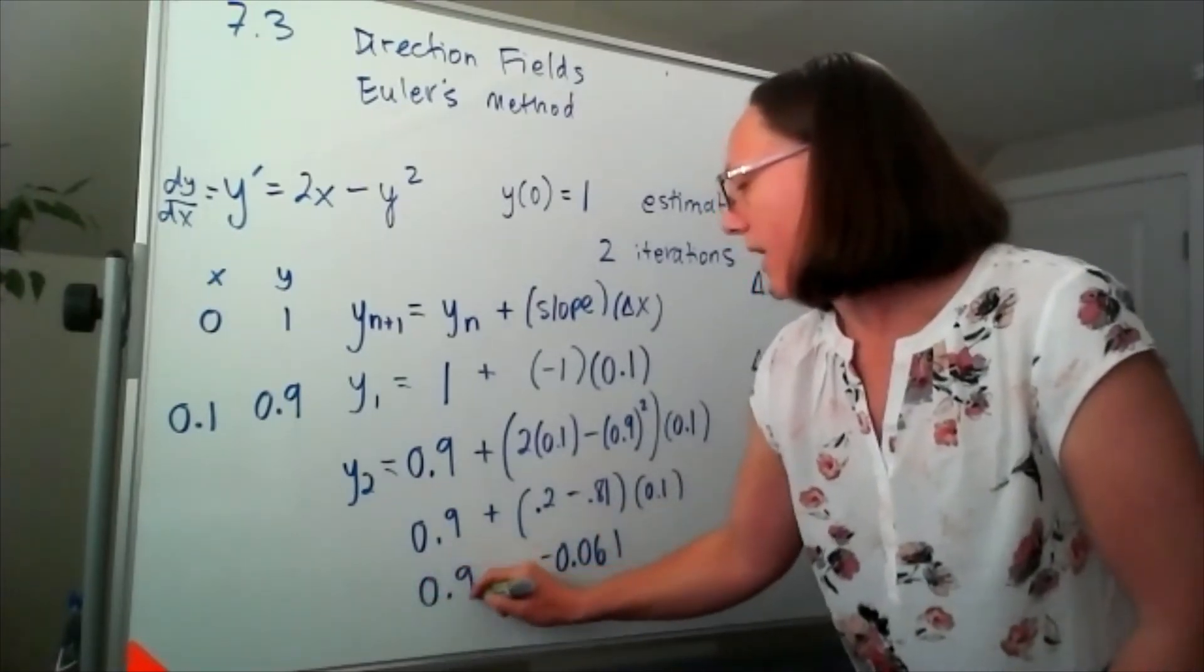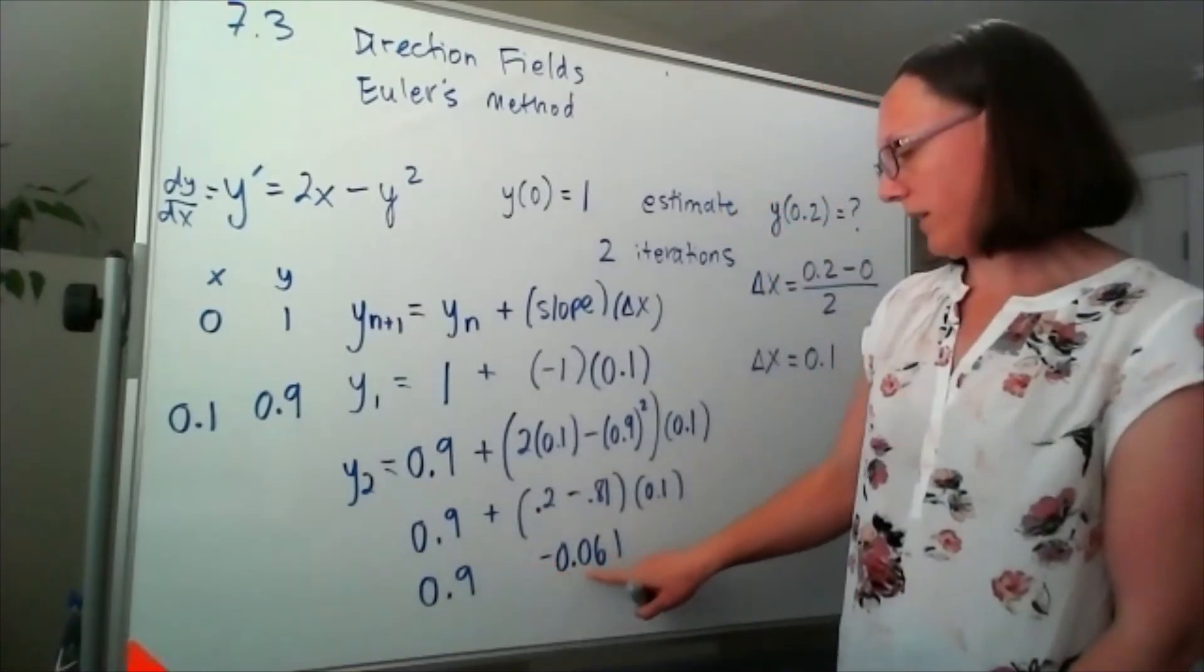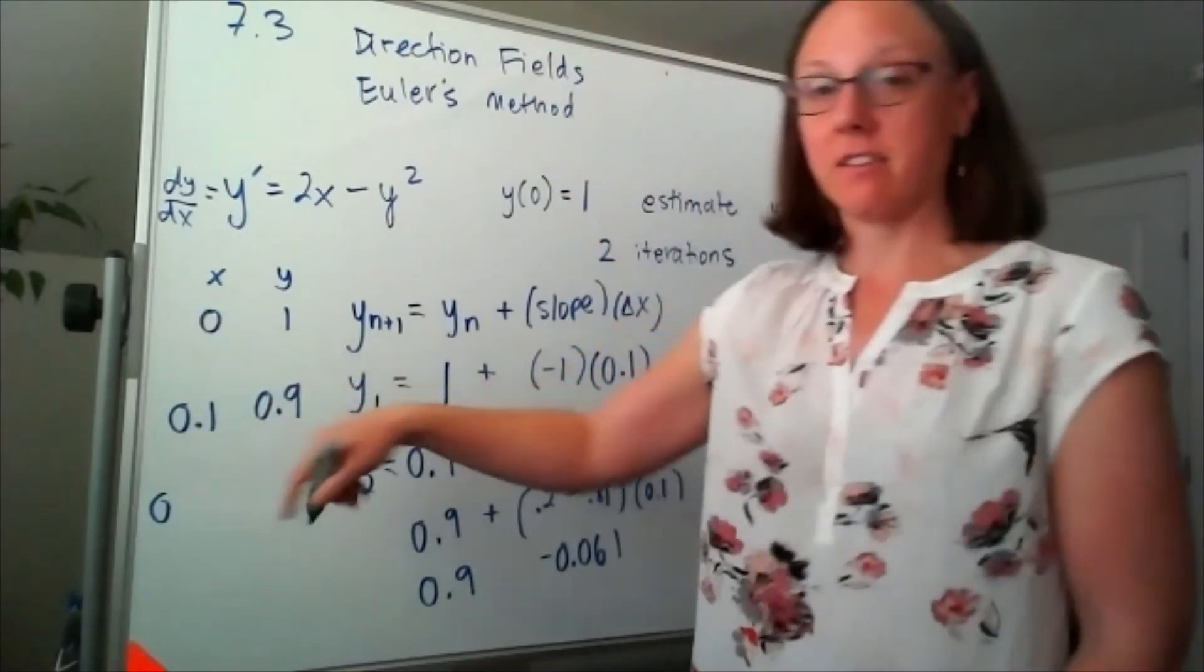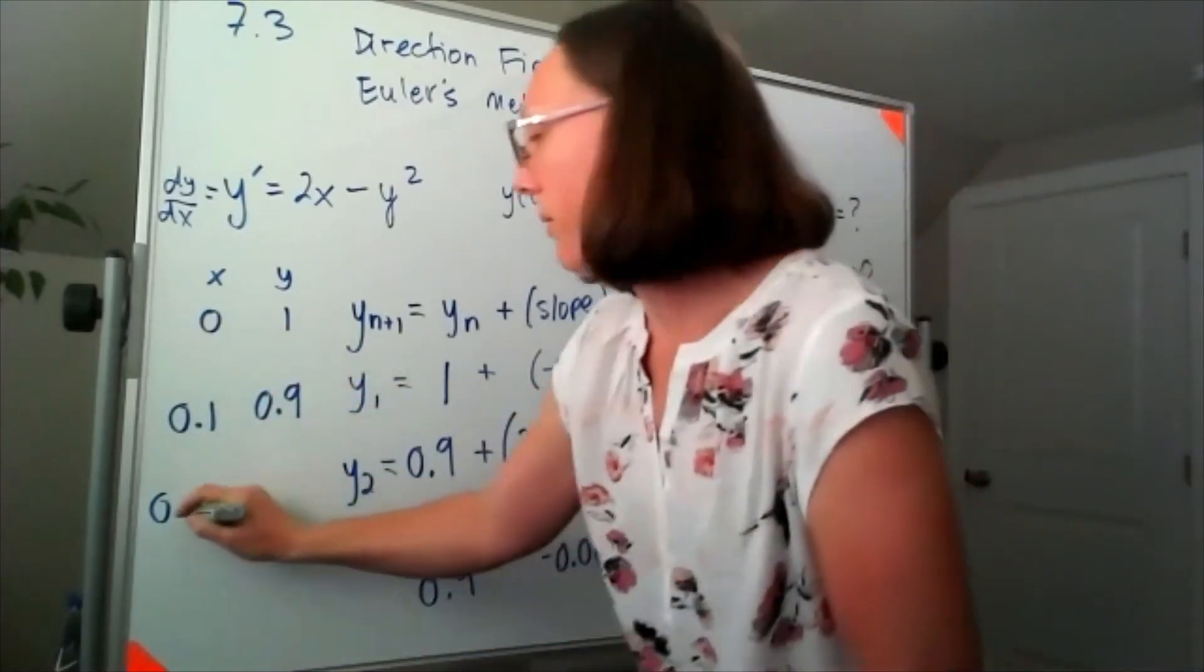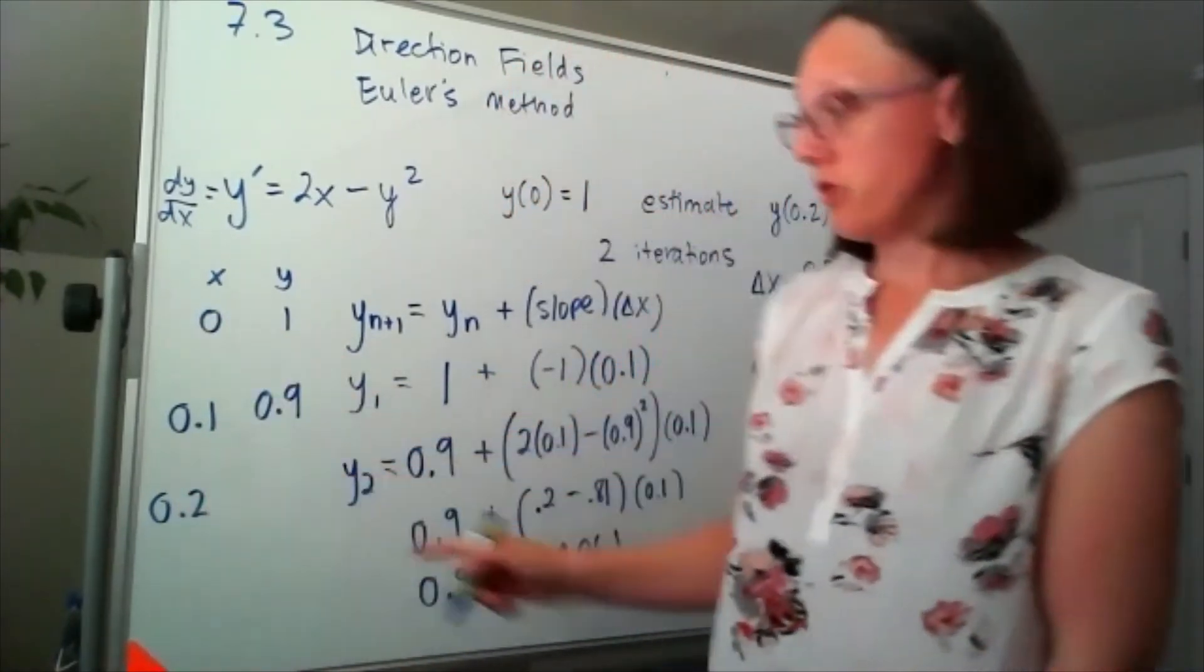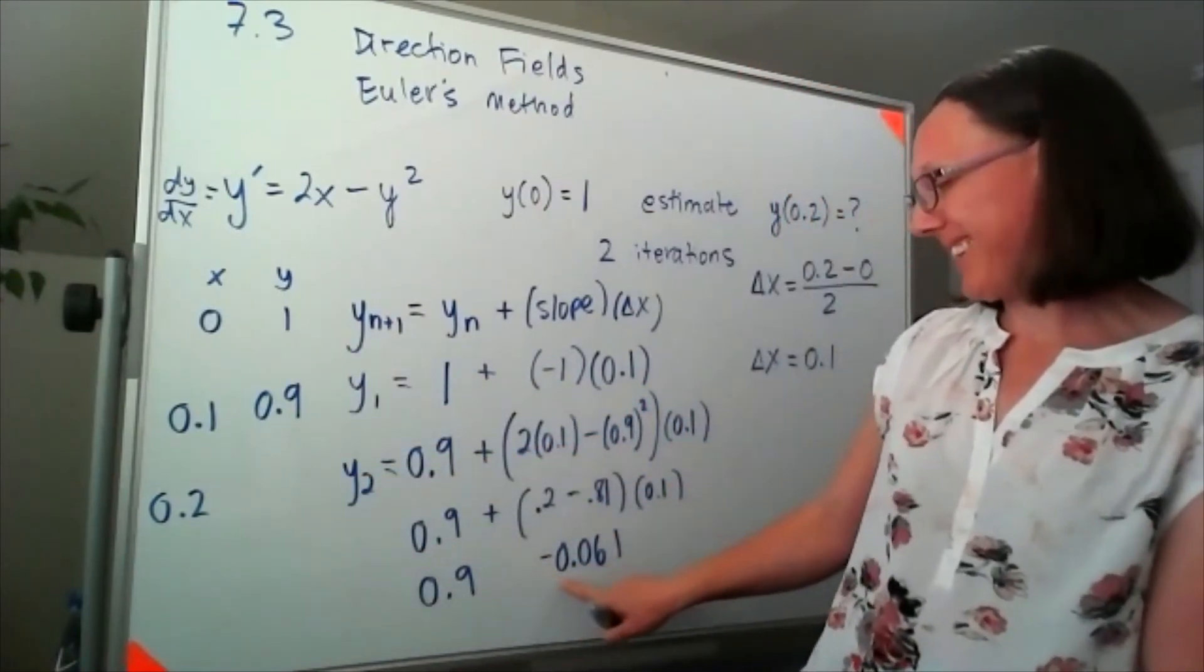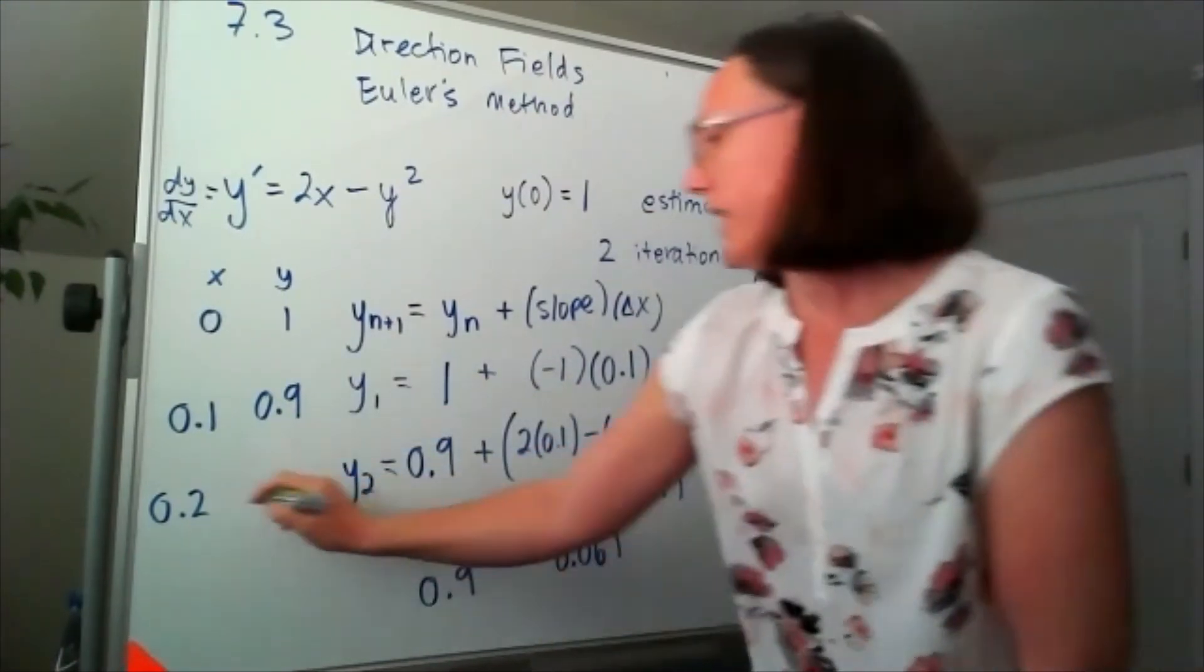So 0.9 minus 0.061, I think it's going to put me, my x-value, I've taken one step, so I'm at 0.2, and my y-value is 0.9 minus 0.061.